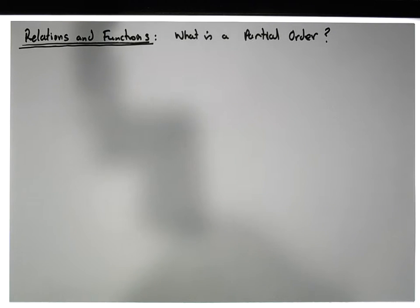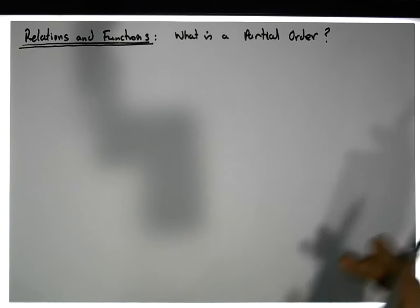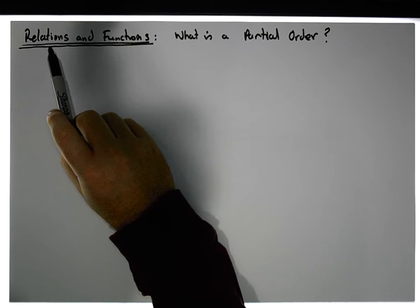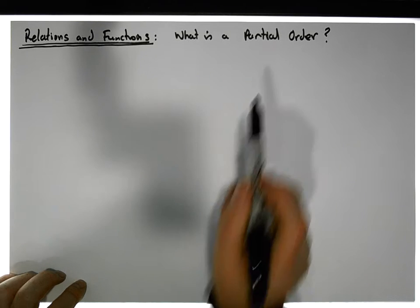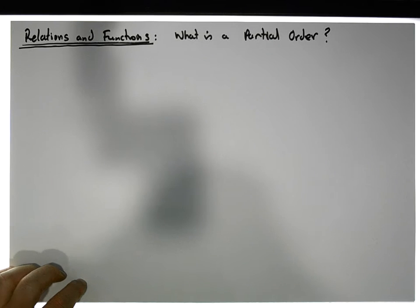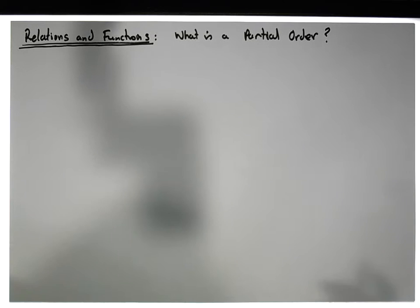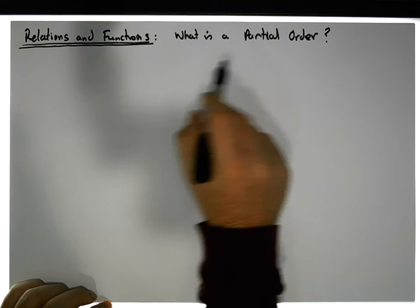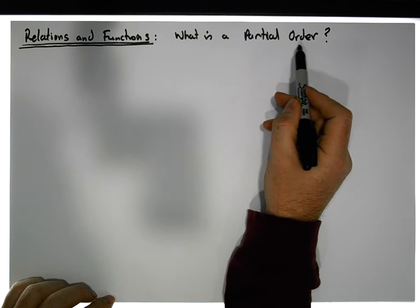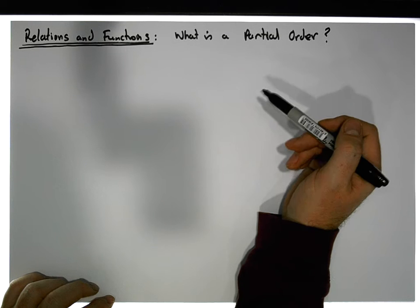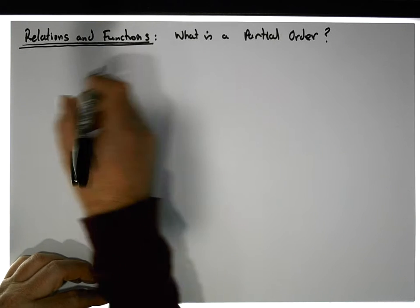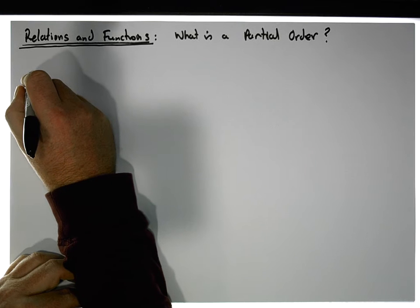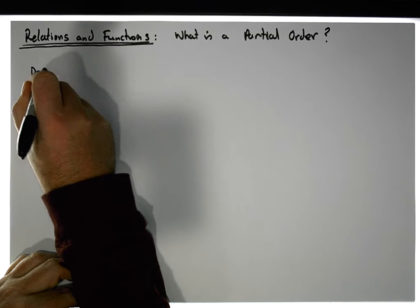Hi guys, this is Jonathan Lambert with the Mathematics Development and Support Service at the National College of Ireland. In this short video — another in our series dealing with relations and functions — we're going to define what a partial order is, or what a poset is. A partial order is basically a special type of relation, a relation that conforms to three particular conditions.